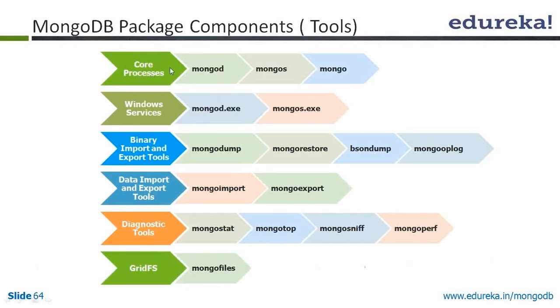Under core processes, mongod, mongos, and the MongoDB shell come. Mongod is our database process and mongos is our query router, which is mainly used for sharded clusters.